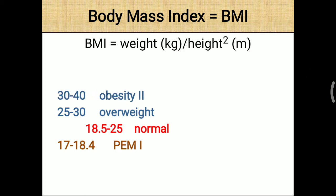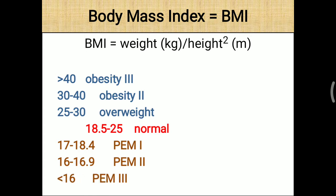Obesity is grade 2 when BMI is between 30 and 40. Below that range falls protein energy malnutrition grade 2. Obesity is also observed when BMI is more than 40, and extreme protein energy malnutrition is seen when BMI is less than 16. You can calculate your own BMI to know whether you are overweight or within normal limits.